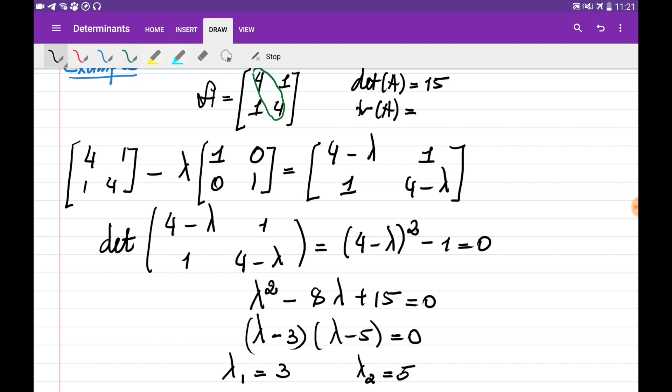The trace of matrix A is the sum of its diagonal entries, which is going to be 8. This is very connected with its eigenvalues.